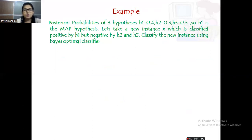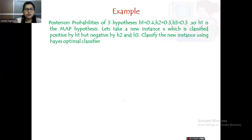Let's work through an example. The posterior probabilities of three hypotheses H1, H2, and H3 are given. From the values, H1 is the MAP hypothesis because it has the highest posterior value. Consider a new instance X which is classified positive by H1 but classified negative by H2 and H3. Using the Bayes optimal classifier, what is our prediction about this new instance?